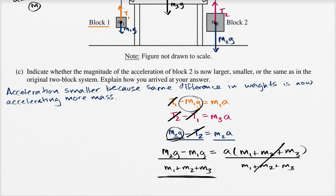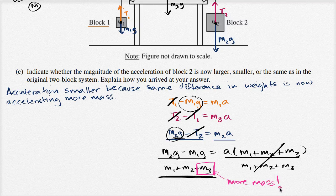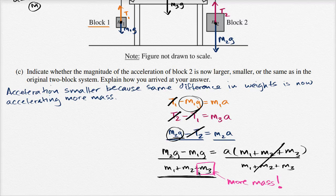Notice you have the same difference in weights providing the net force on the system, but it is now accelerating more mass. More mass to accelerate while you have the same net force acting on the system — the internal forces all canceled out when I added the equations. So if you're taking the same net force and dividing it by more mass, you're going to have a smaller acceleration.